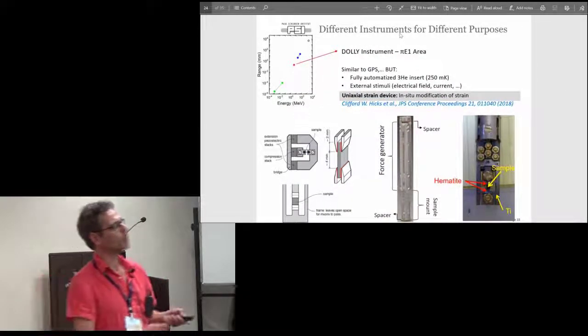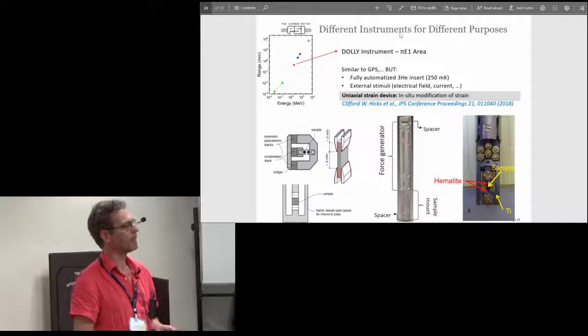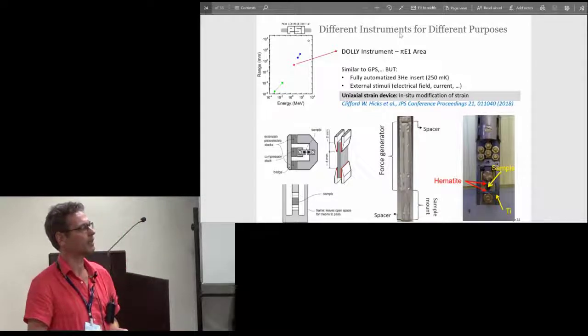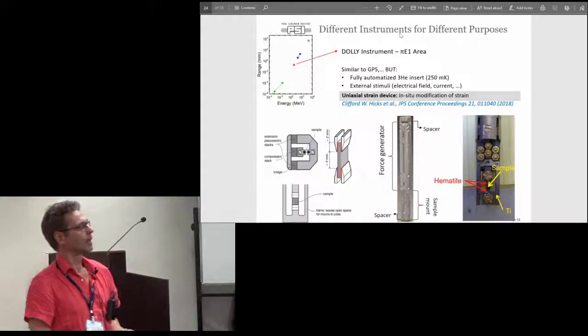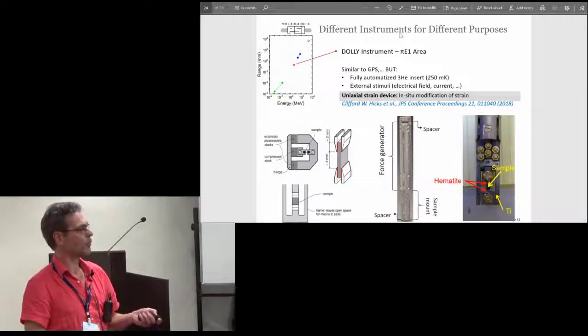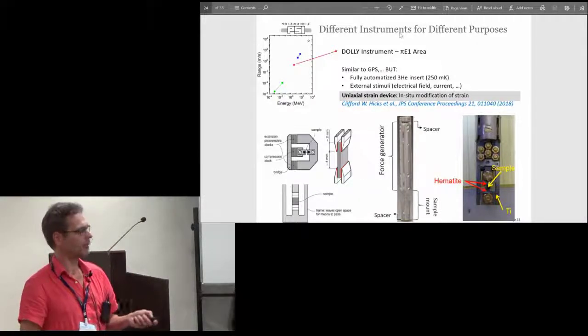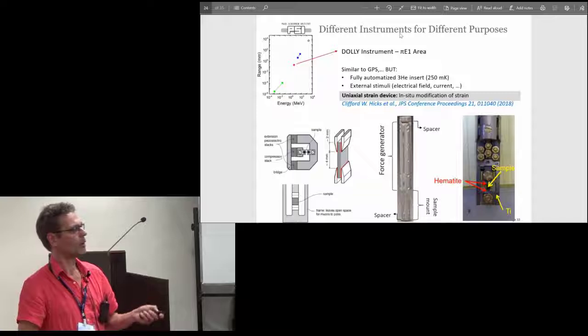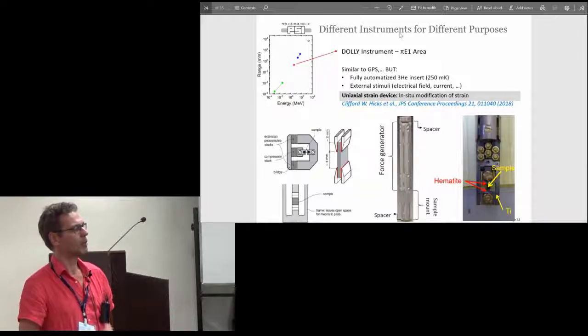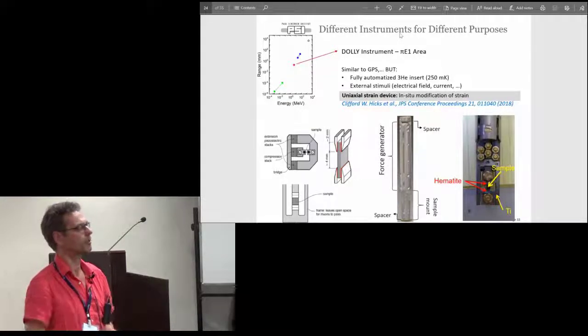There's another instrument which is more for doing some external stimuli tests like applying electric field or what we have seen this morning in the talk by Sarkar. There is a collaboration actually initiated by the people from Dresden University and the Max Planck Institute in Dresden where you have this strain device where you can apply in situ uniaxial strain to change the parameters or to change the properties of your sample.